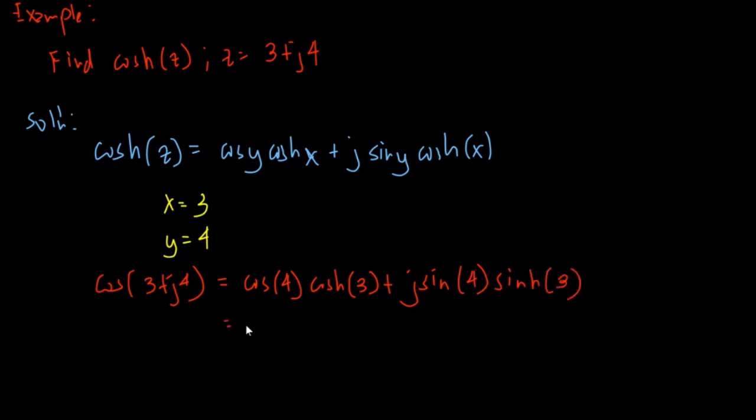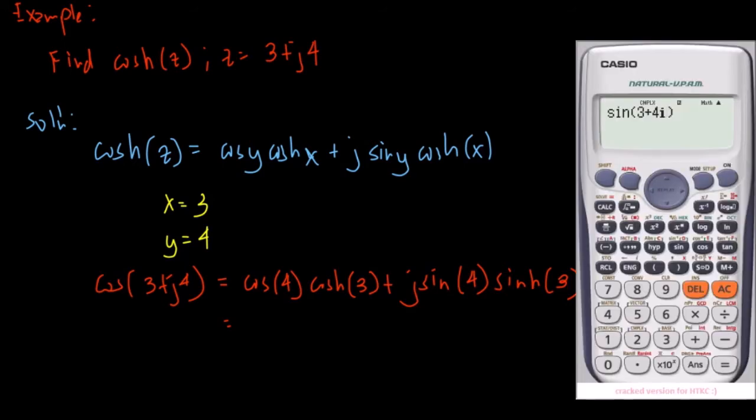We will be using our calculator to solve this one. So our calculator, so it's cosine 4. So you need to set mode, you need to set your calculator in radians plus. So that is hyperbolic, it is cosine, so it is 2, this is 3.